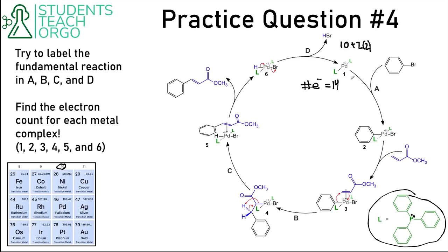Let's look at the reaction going from 1 to 2. The palladium inserts itself into the bond between the bromine and the benzene ring. We can see that the palladium is oxidized during this reaction, becoming +2. This reaction is oxidative addition because we are taking the metal, inserting it into the bond, increasing the number of ligands by 2, and increasing the oxidation state by 2.